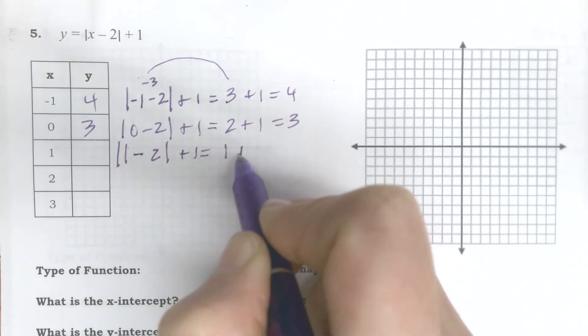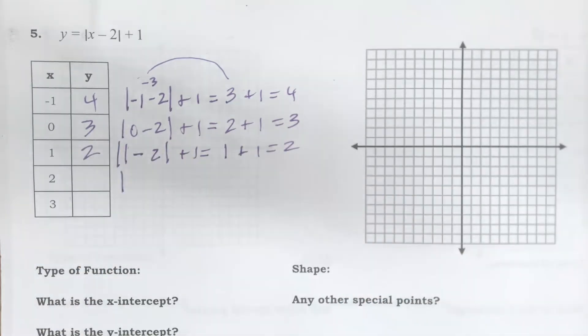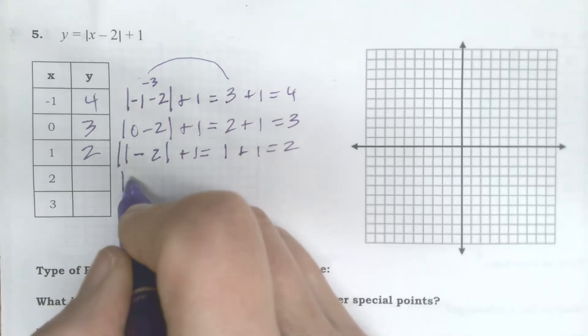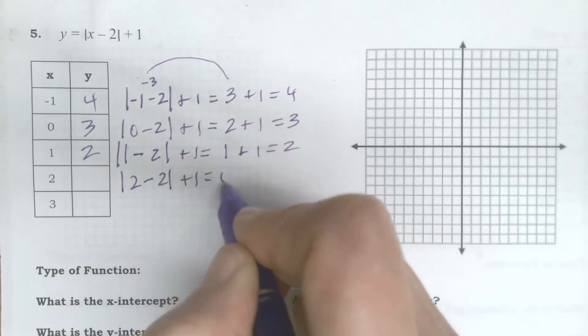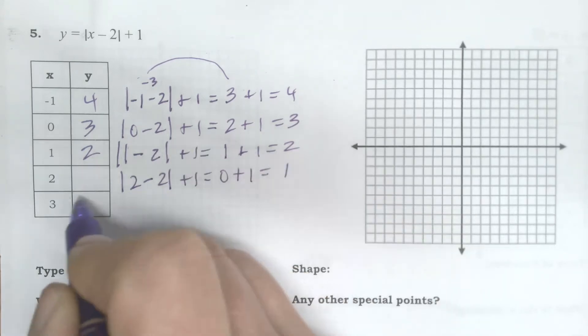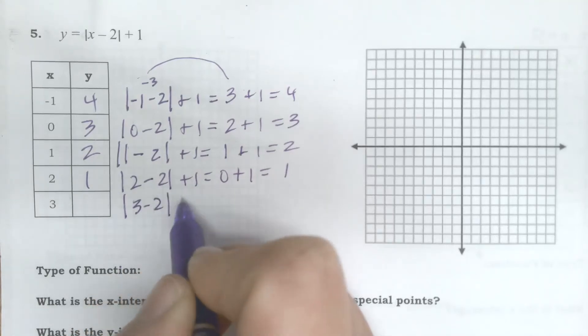And then I do my next one. 1 minus 2 plus 1. Well, that's 0. 0 plus 1 is 1. And I'll do the last one. I got to put that in there. 3 minus 2 plus 1. The absolute value of 1 is 1. 1 plus 1 is 2.